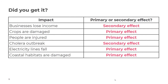We're now ready to mark our work. Please use a different colour pen. Businesses lose income is a secondary effect. Crops are damaged is a primary effect. People are injured is a primary effect. Cholera outbreak is a secondary effect. Electricity lines fall is a primary effect. Coastal habitats are damaged is a primary effect. Make any corrections needed, and give yourself a tick for correct answers.